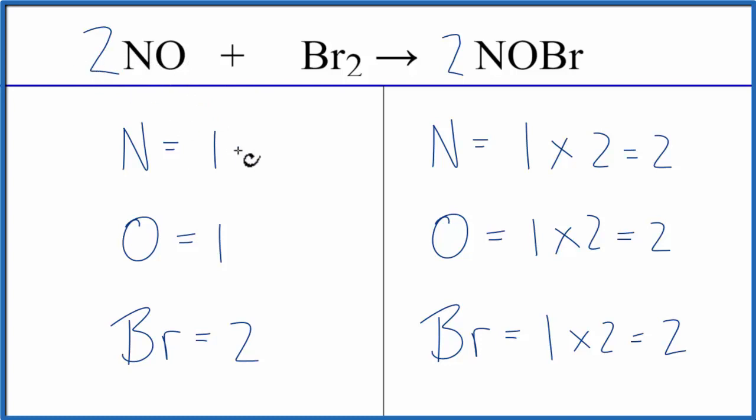So 1 Nitrogen times 2, that'll give us 2. The Nitrogens are balanced. 1 Oxygen times the 2, now the Oxygens are balanced, and everything is balanced. So we're done with this equation.